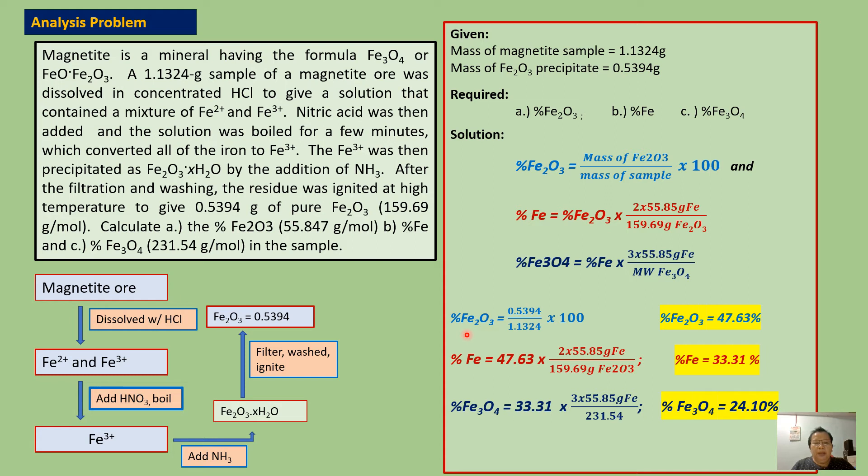Percent Fe2O3 equals the mass of Fe2O3, which is 0.5394, divided by the mass of sample, which is 1.1324 times 100. Simplifying, the answer is 47.63 percent Fe2O3.